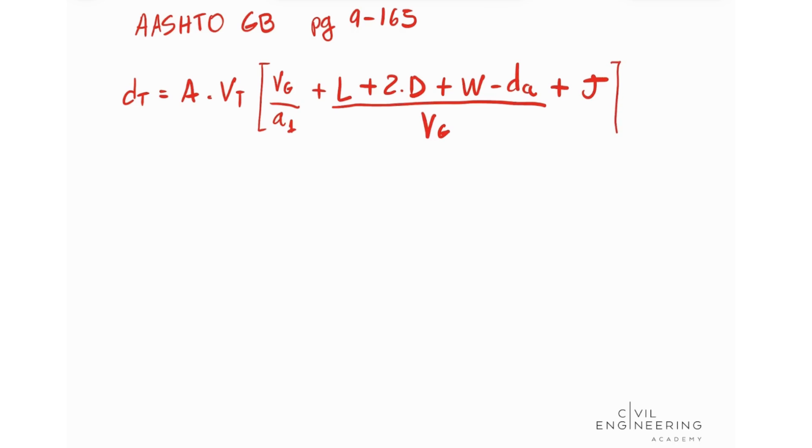Okay so all these values I'm talking about if you open your AASHTO Green Book on page 9-165 you're going to find the description and also the values for each one of these variables. So we have everything so we just need to plug in these values. So let's do that.